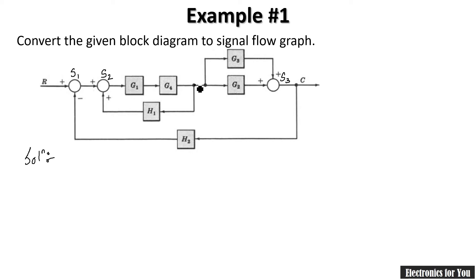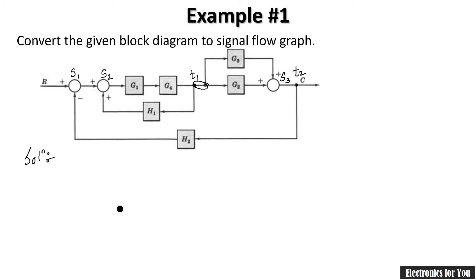Now find the takeoff points. The first takeoff point is T1. You might think there is a second consecutive takeoff point, but two consecutive takeoff points are one and the same, so I consider them as a single node T1. The second takeoff point is T2. The input and output are also identified here.